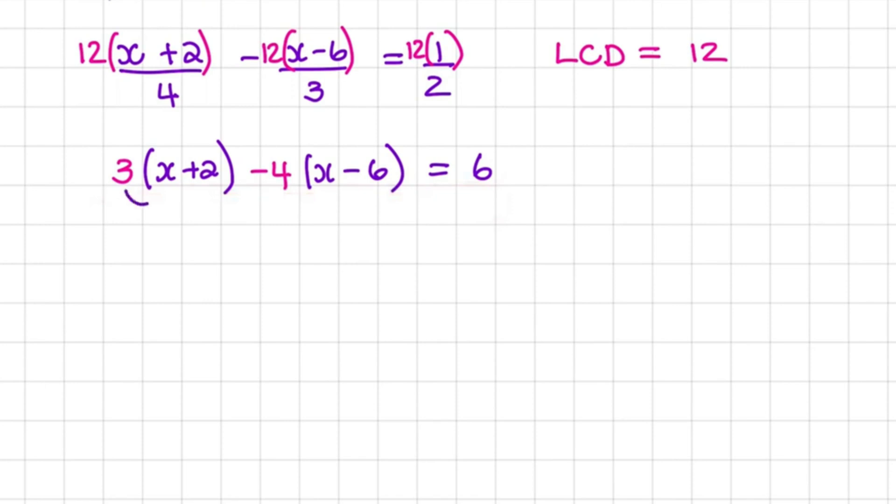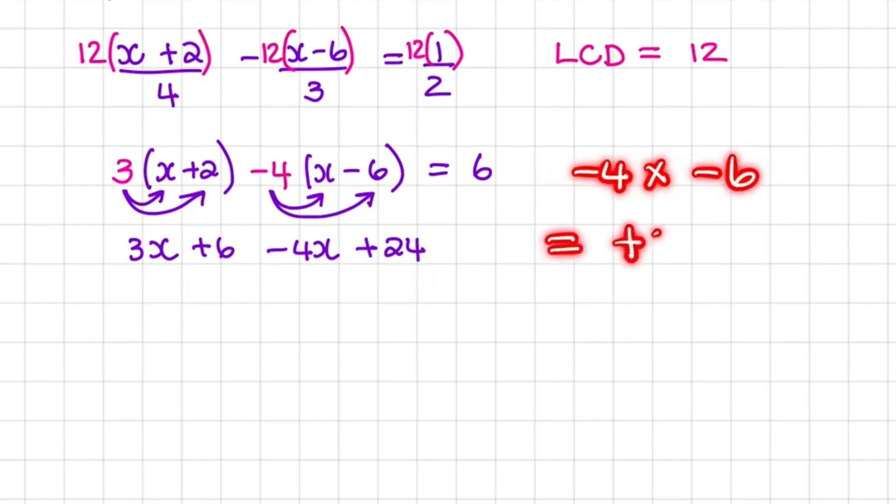All that we need to do is multiply out. So 3 times x is 3x, 3 times 2 is plus 6. Negative 4 times x is negative 4x, and negative 4 times negative 6 is plus 24, because a negative number multiplied with a negative number produces a positive value. And all of that is equal to 6.